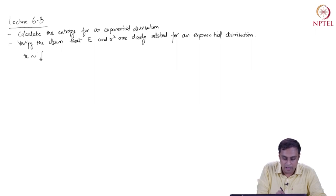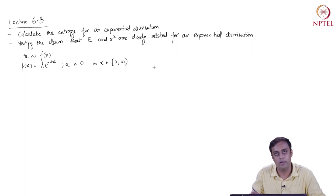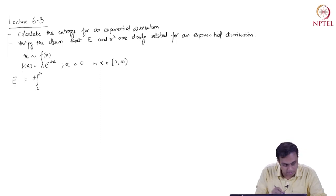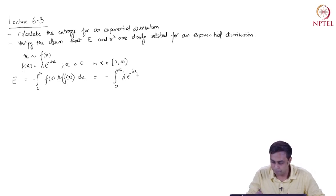We have x which is distributed f of x, and f of x is given as λe^{−λx} such that x ≥ 0, or x belongs to the set [0, ∞). The entropy measure by definition is the integral from 0 to infinity of −f(x) ln f(x) dx.